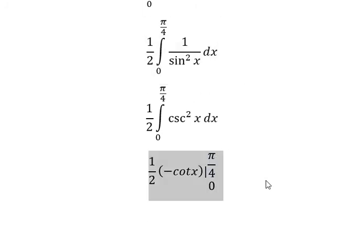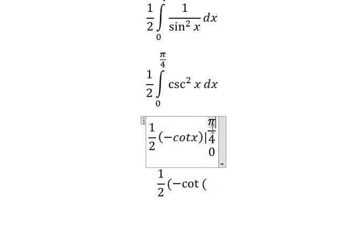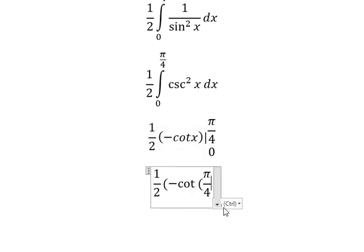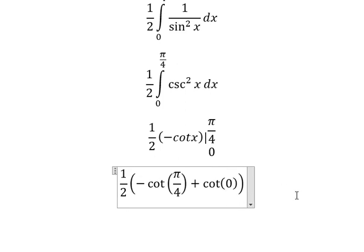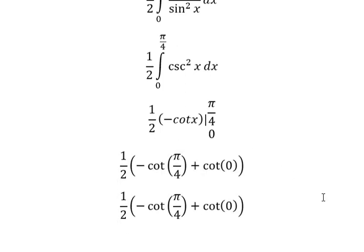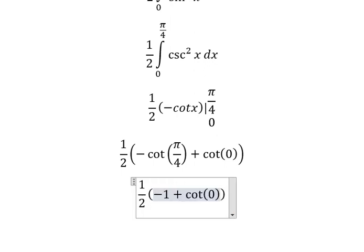Now we get the final answer. We put π/4 here and zero here. We get -cot(π/4) plus cot(0). This one is -1, and this one we need to do a limit.